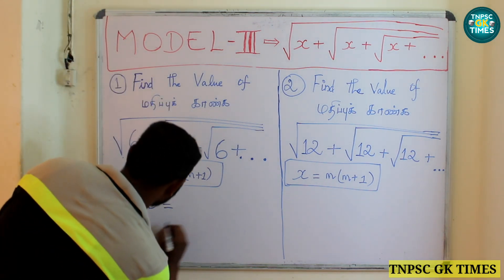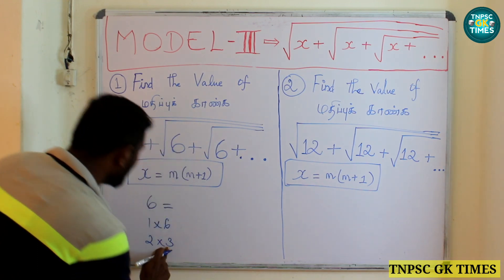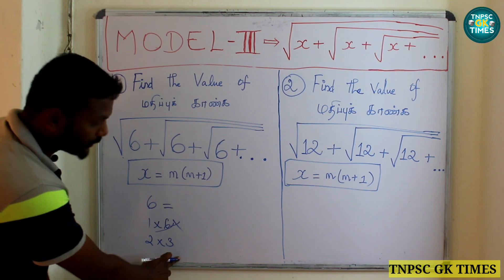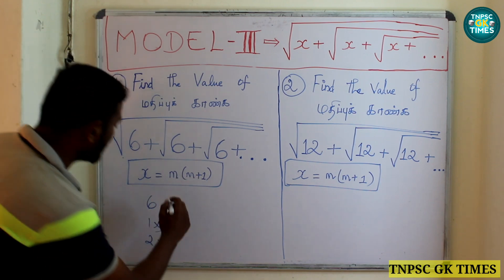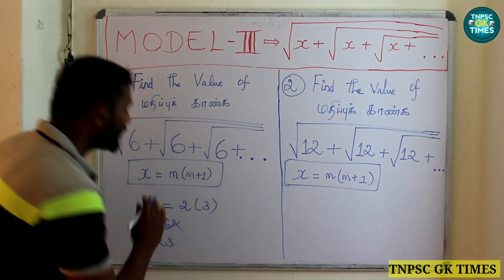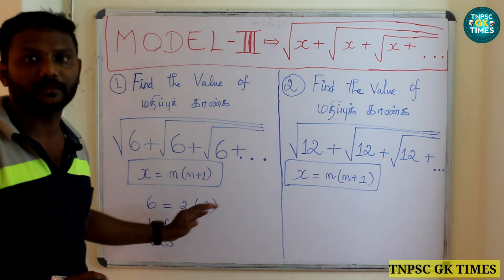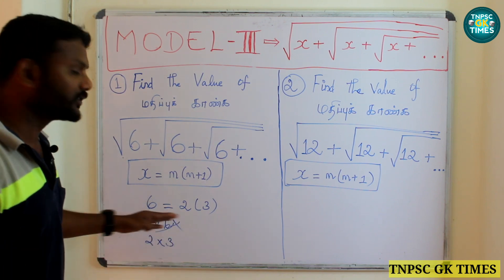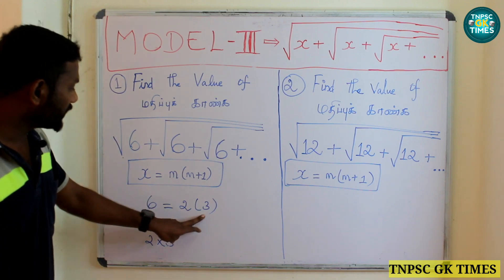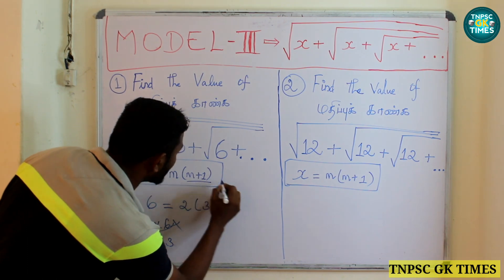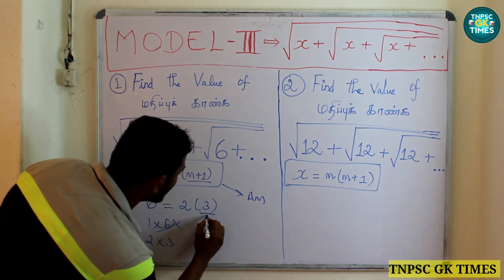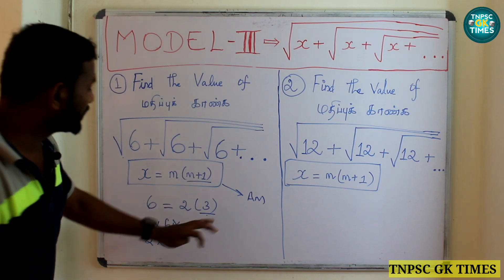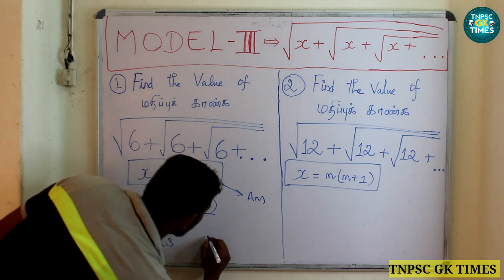Consider x equal to m times (m + 1). For example, x = 6. We write 6 = m × (m + 1). Since 2 × 3 = 6, the consecutive terms are m = 2 and m + 1 = 3. For the addition model, the answer is the biggest term, which is m + 1. So m + 1 = 3, and the answer is 3.